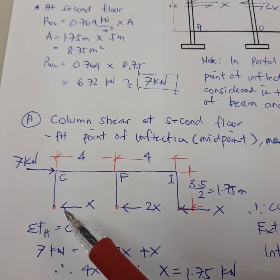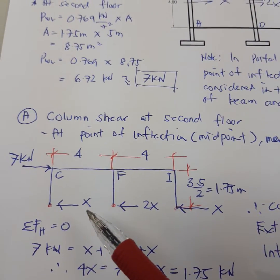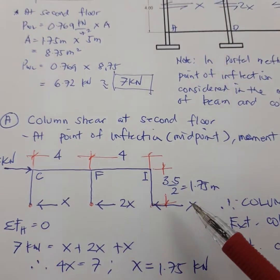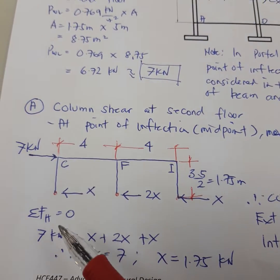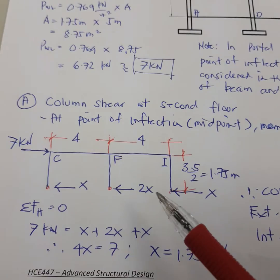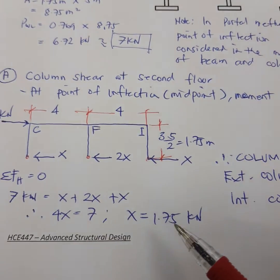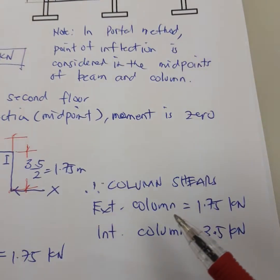Using portal method, the exterior column has x, interior has 2x, and another exterior has x. You total the forces along horizontal, you have 7, 2x and x. So you can compute x which is 1.75. In other words, exterior is 1.75 and interior 3.5.